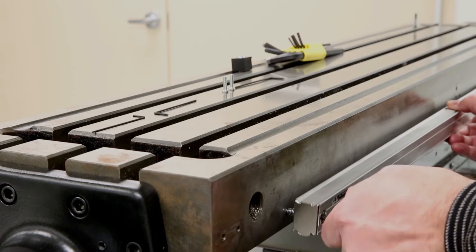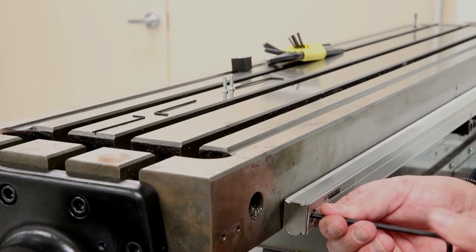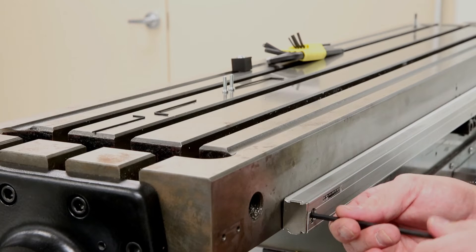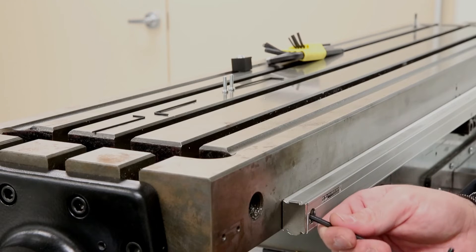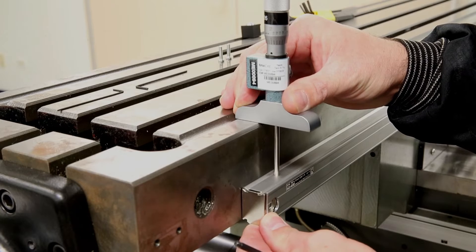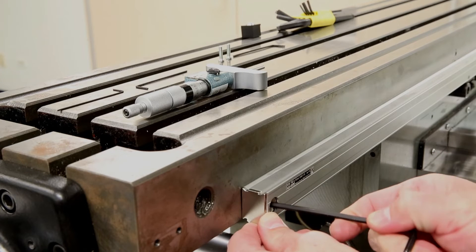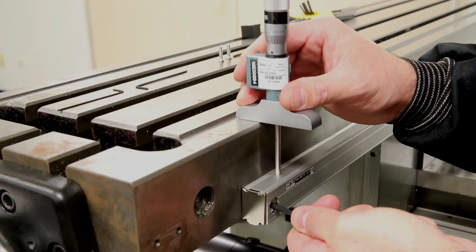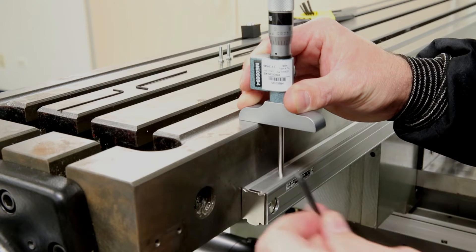First, we're going to take our bolt, put it through the scale end cap, and snug it to the table. Next, take our depth mic. Measure from the top of the bed to the top of the scale from the measurement we took before we took the scale off. Go ahead and tighten down the bolt.